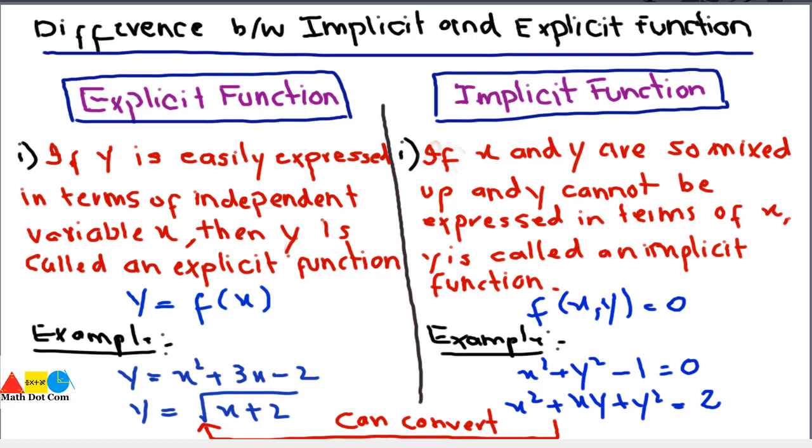That's why implicit and explicit functions are categorized. Sometimes the function cannot be converted into a form in which x and y can be independently expressed. So implicit functions are functions where they are mixed up together and it is difficult for us to separate x and y. In explicit functions we can easily separate x and y from each other.